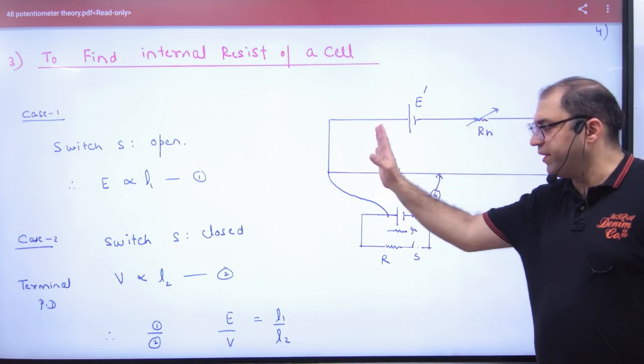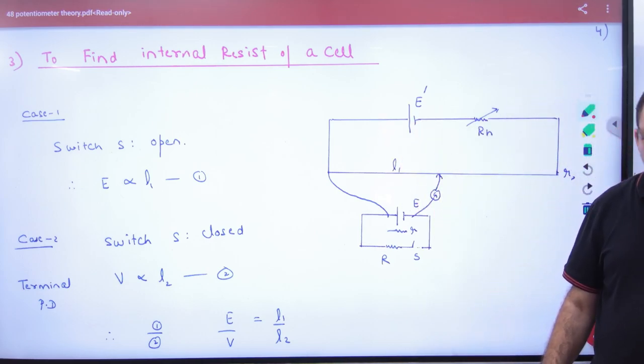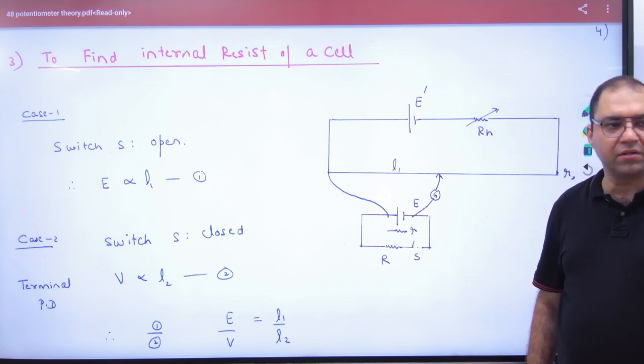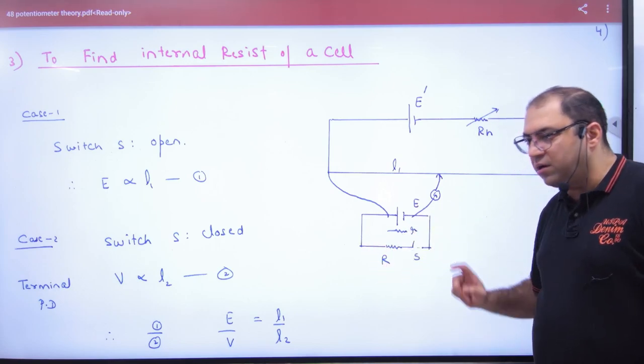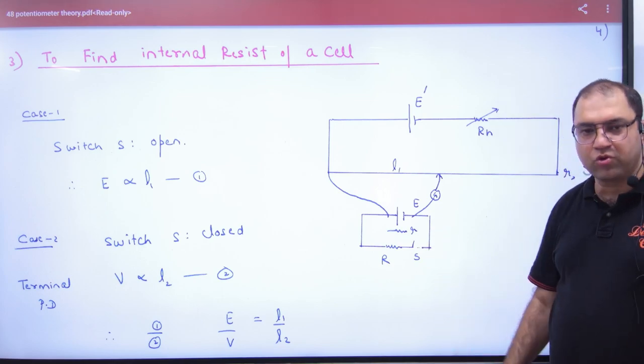The first one uses a potentiometer. Put a battery whose internal resistance is small r. Now there is external resistance capital R and a switch that is open.